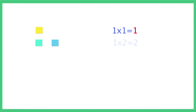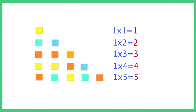Here's a fun fact. One counter once is 1, two counters once is 2, three taken once is 3, and so on. The number 1 is a friendly number. When any number is multiplied by 1, the original number does not change.